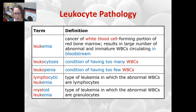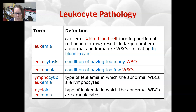Leukemia is a cancer of the white cells originating in the white-cell-forming portion of the red bone marrow. It results in a large number of abnormal and immature white cells that circulate in the bloodstream.